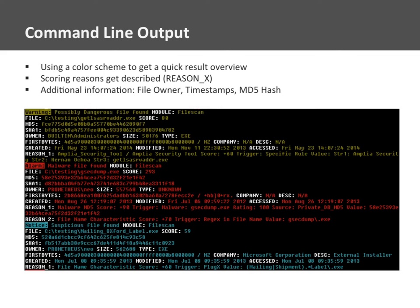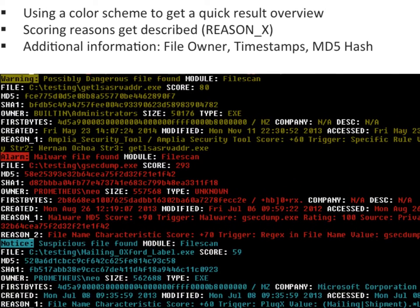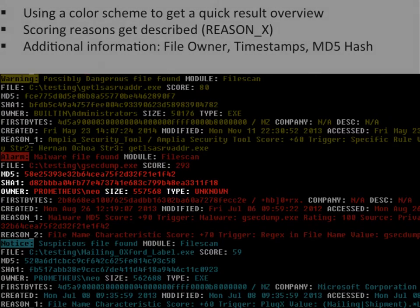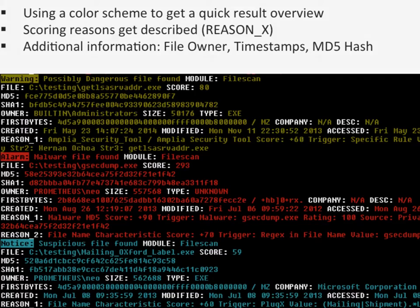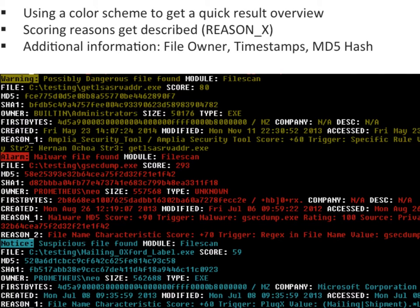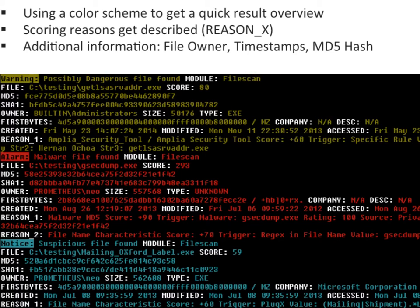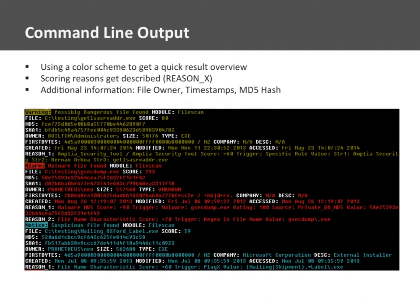Let's have a look at the different output types. This screenshot shows a command line output of Thor. You can easily spot the relevant information. The red colored alarm in the center shows a password dumper — GSEC dump — with a pretty high score. You see various hashes, the owner, size, type and several timestamps. You can also see the first 50 bytes of a file in hex encoded form, followed by all ASCII characters in that first 50 bytes. Below you find the reasons that led to the total score. Thor will only show the two top scoring reasons unless you instruct it otherwise.